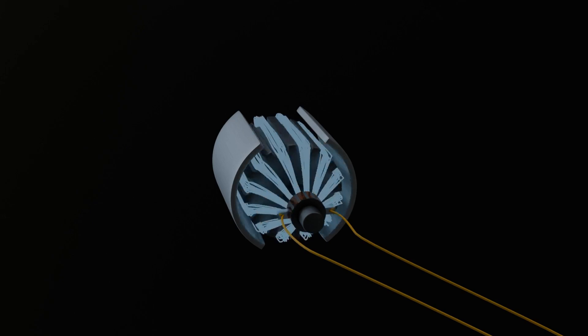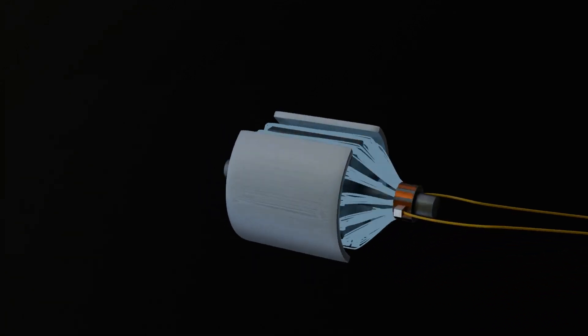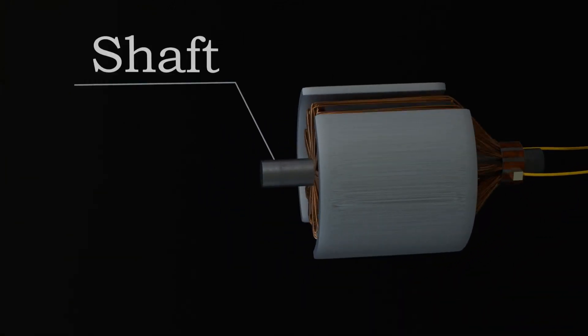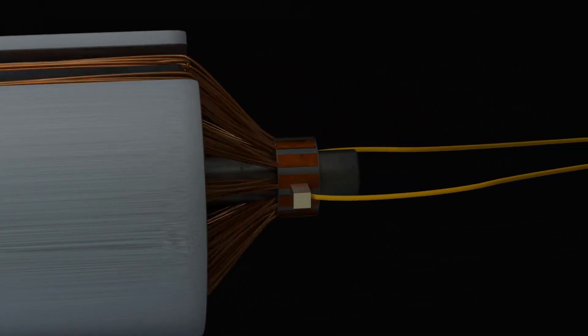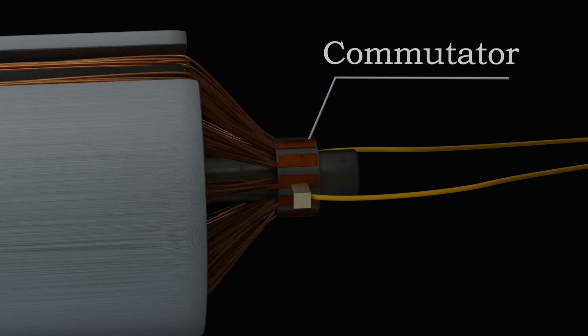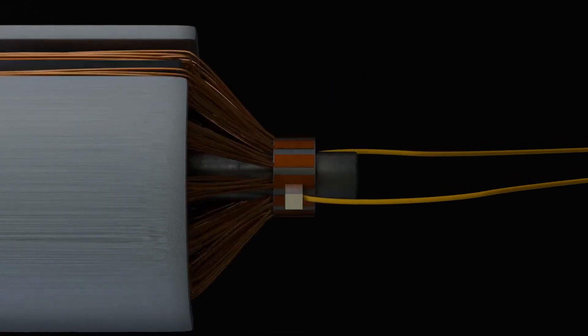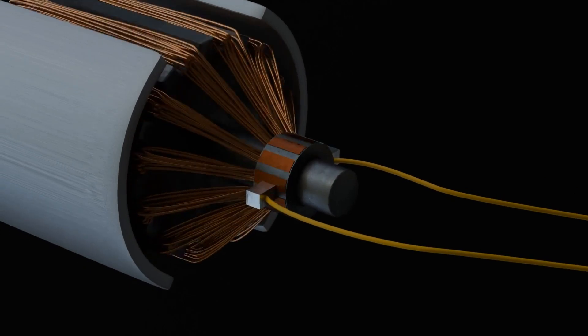These windings carry the current that interacts with the magnetic field to generate motion. The rotor also has a shaft, which connects it to the load or external mechanism that the motor is intended to drive. Around the shaft is the commutator, a critical component that ensures the motor's smooth operation. The commutator's primary job is to reverse the direction of the current in the windings at the right moment to maintain continuous rotation.